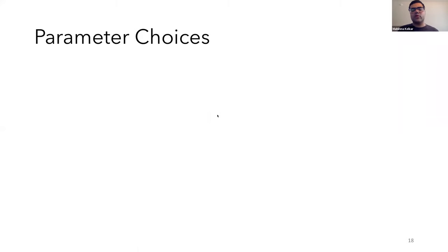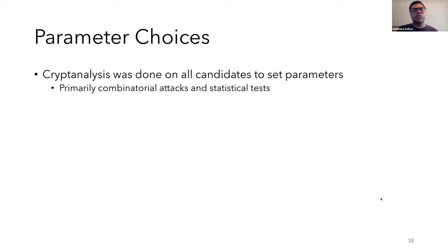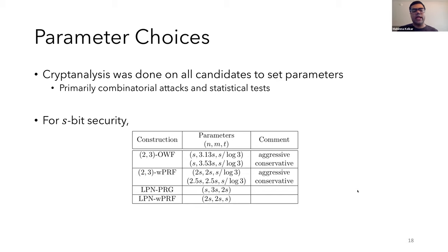So we performed extensive cryptanalysis on all of our candidates, including the one from Boneh et al., and used it to influence our parameter choices. In this work, we primarily focused on combinatorial attacks and statistical tests. For s-bit security, here's the parameter table for our candidates. So we give both aggressive and conservative choices for our two-three candidates. And notably, our one-way function and PRG candidates have s-bit inputs, which is minimal for s-bit security. And this is possible in principle for LPN weak PRF as well, but at the cost of other parameters, which hurts MPC friendliness. One other thing to note here is that since our constructions are quite new, it's not unlikely that even the conservative parameters could be broken. So we definitely welcome more cryptanalysis.